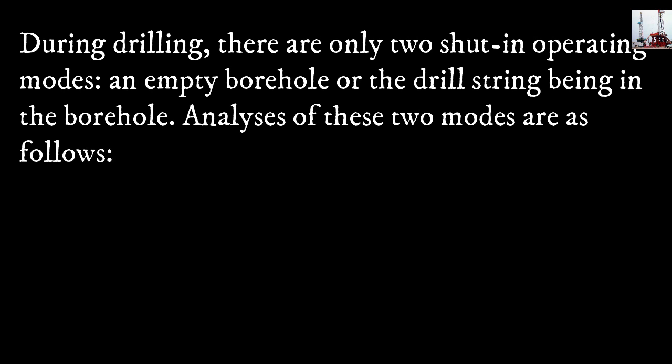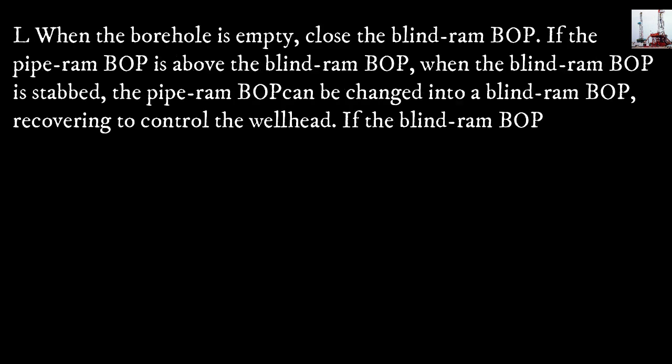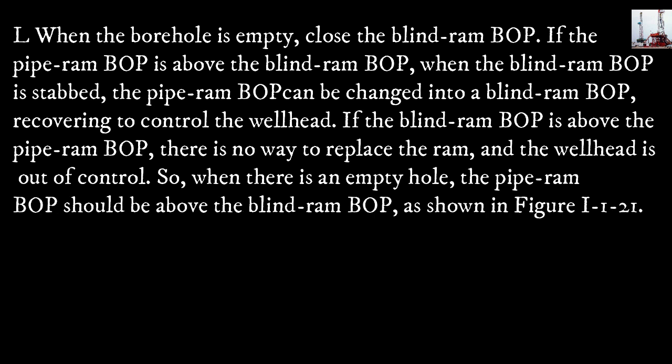During drilling, there are only two shut-in operating modes: an empty borehole, or a drill string in the borehole. Mode 1 — when the borehole is empty, close the blind ram blowout preventer. If the pipe ram BOP is above the blind ram BOP and the blind ram BOP is stabbed, the pipe ram BOP can be changed into a blind ram BOP, recovering control of the wellhead. If the blind ram BOP is above the pipe ram BOP, there is no way to replace the ram and the wellhead is out of control. Therefore, when there is an empty hole, the pipe ram BOP should be above the blind ram BOP, as shown in Figure 1121.